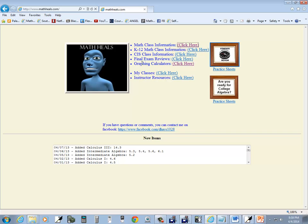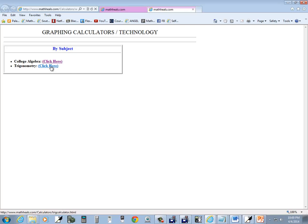It currently says graphing calculators, but I'm thinking about changing that to graphing calculators slash technology. If you click that, then you can go into subject. Now, I'm slowly working my way down. I'm going to put different subjects in here.